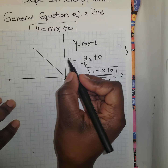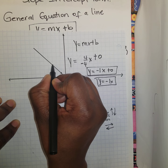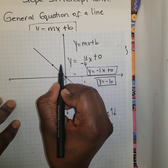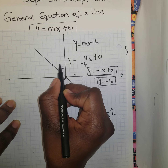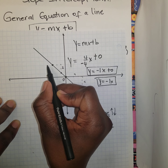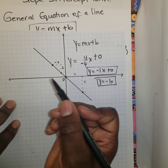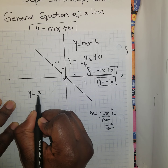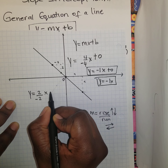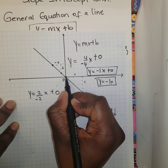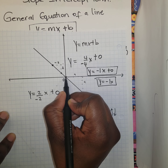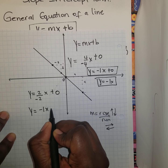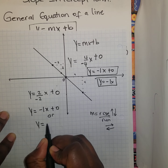Let's verify using another two points on the line. The rise is 1, 2 — so 2 up. The run is 1, 2 — going in the negative direction, so negative 2. So y equals 2 over negative 2 x plus 0, because that's where the line cuts the y-axis. Simplifying gives y equals negative 1x plus 0, or y equals negative x — the same answer as before.